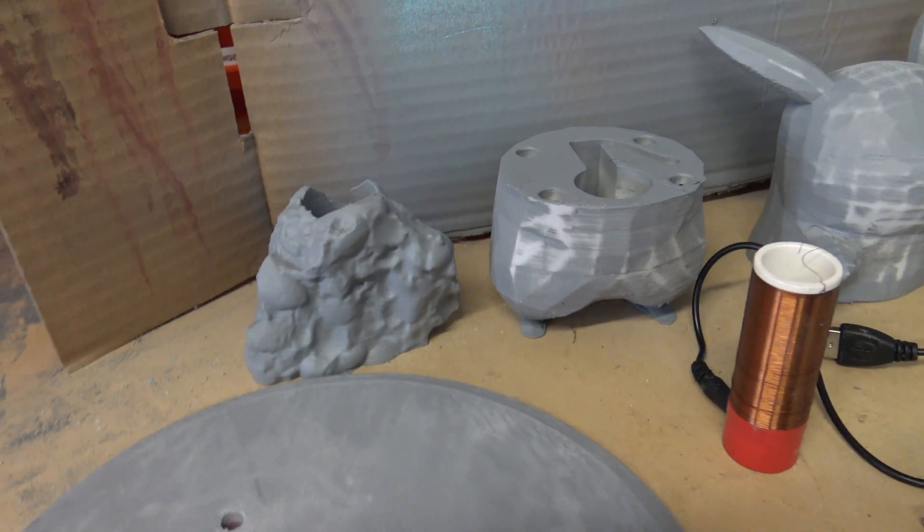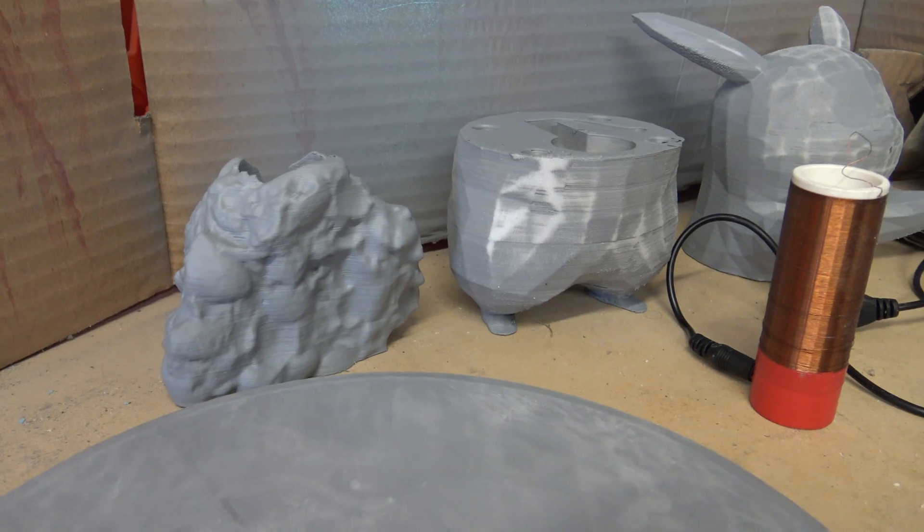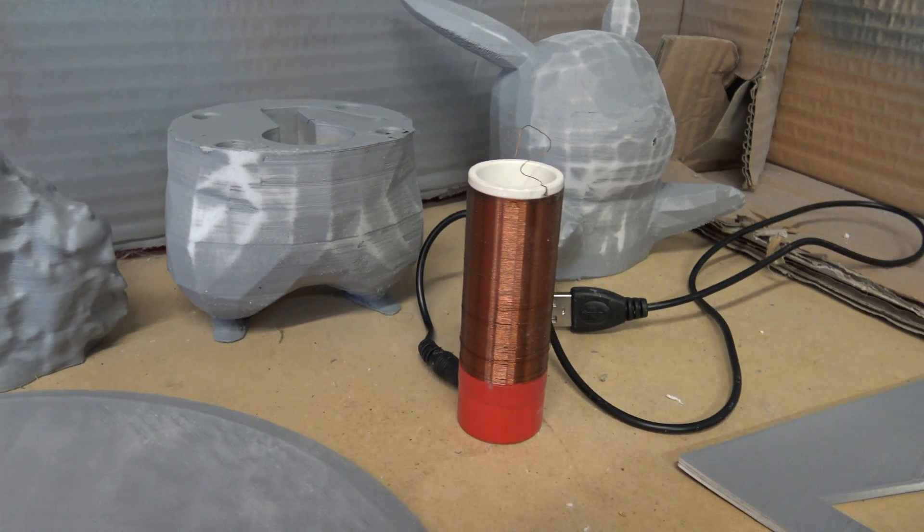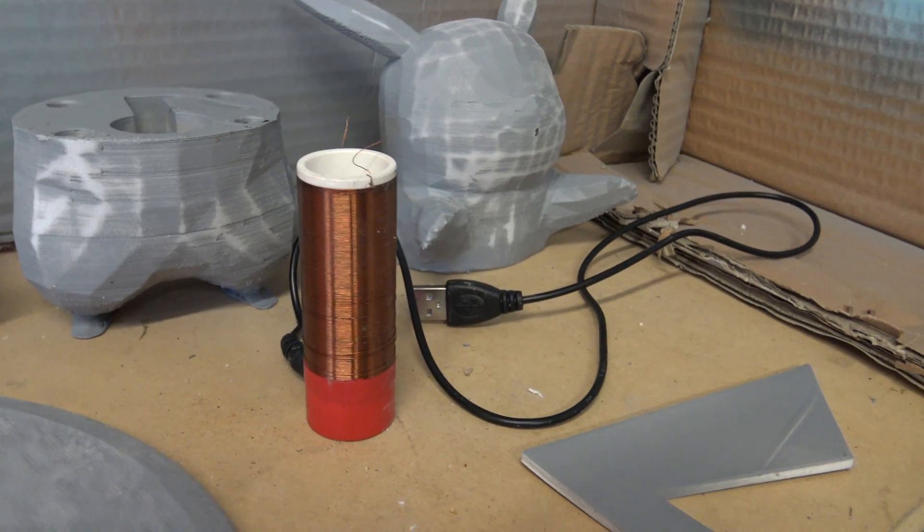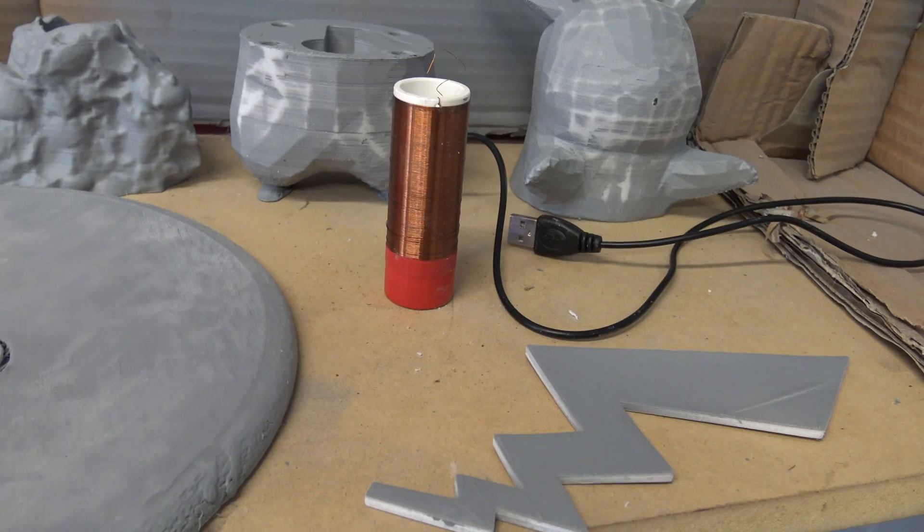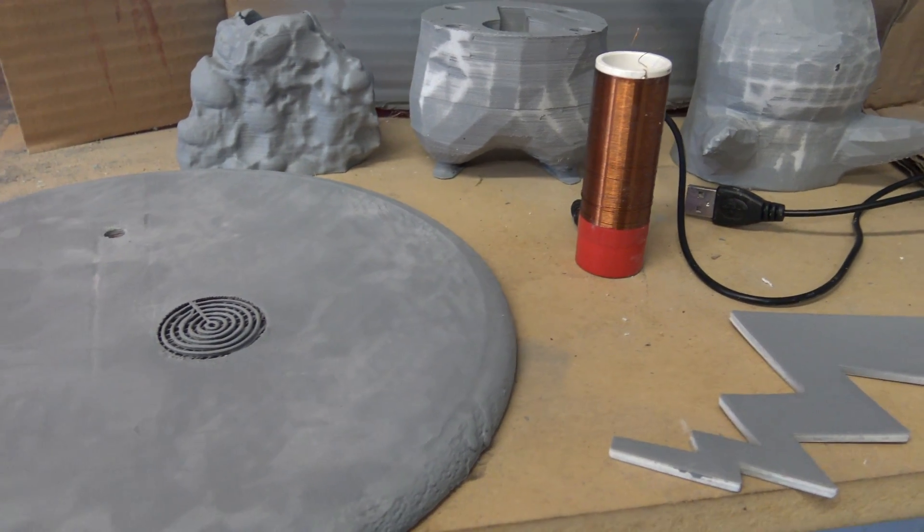Now before, you saw us sanding and priming the project and you can see the finish of that process. So we have the rock that the lamp will sit in, the legs and the top of Pikachu, also the Tesla coil USB that we'll be using as the electronics for this project, Pikachu's tail and the base.